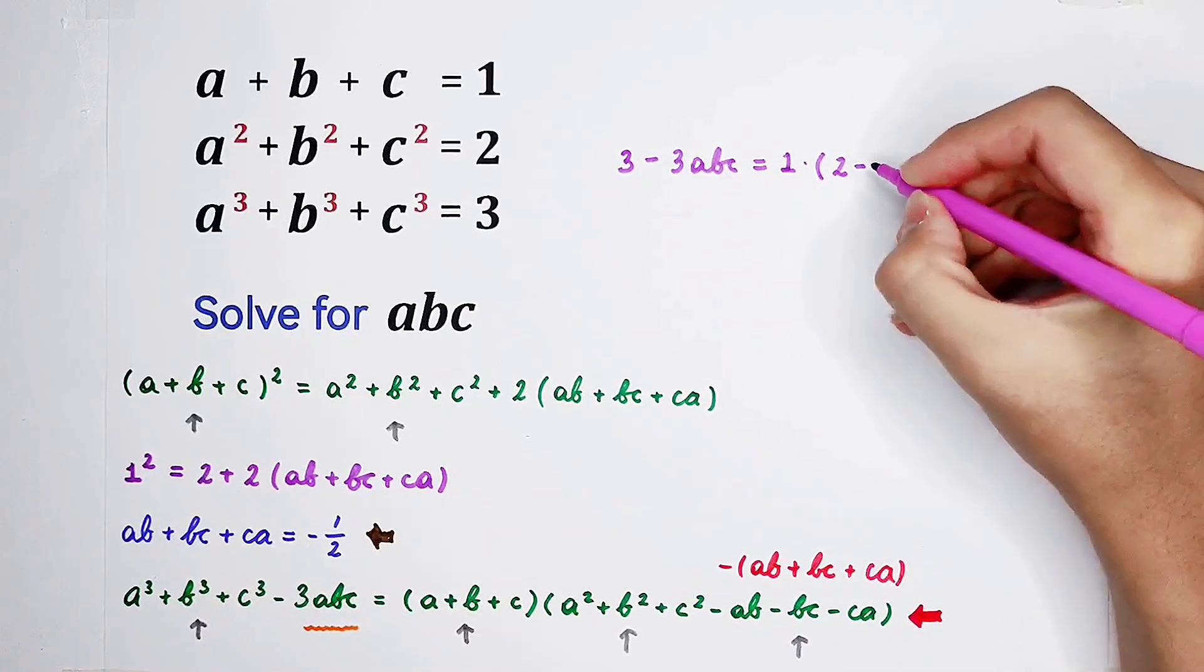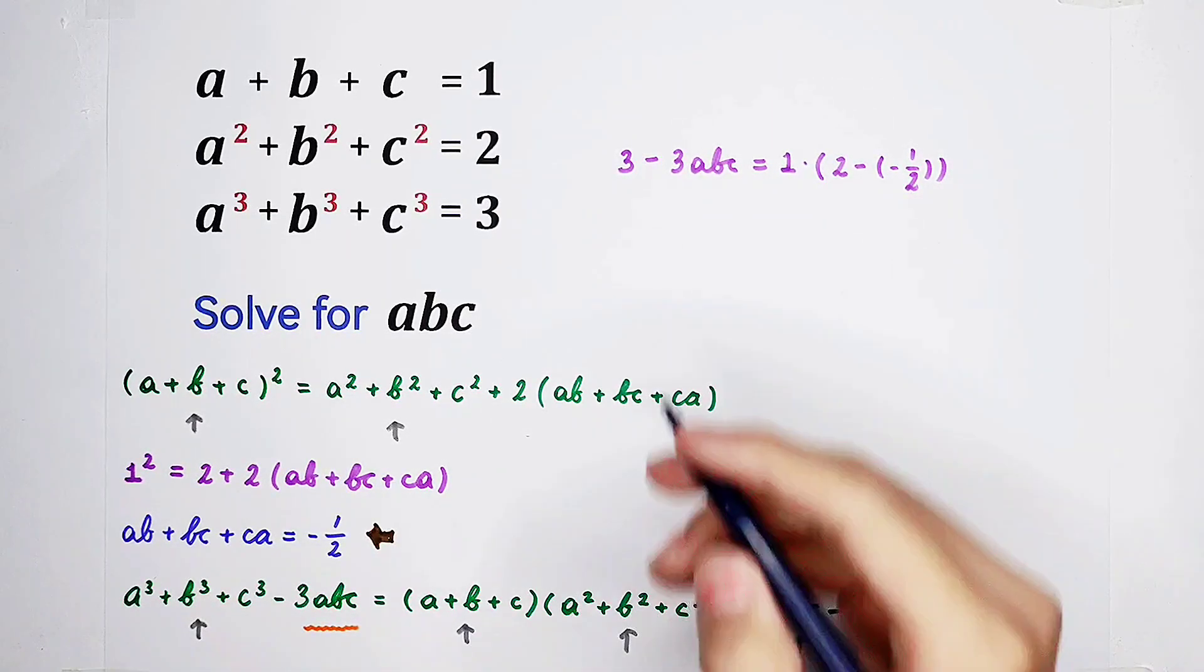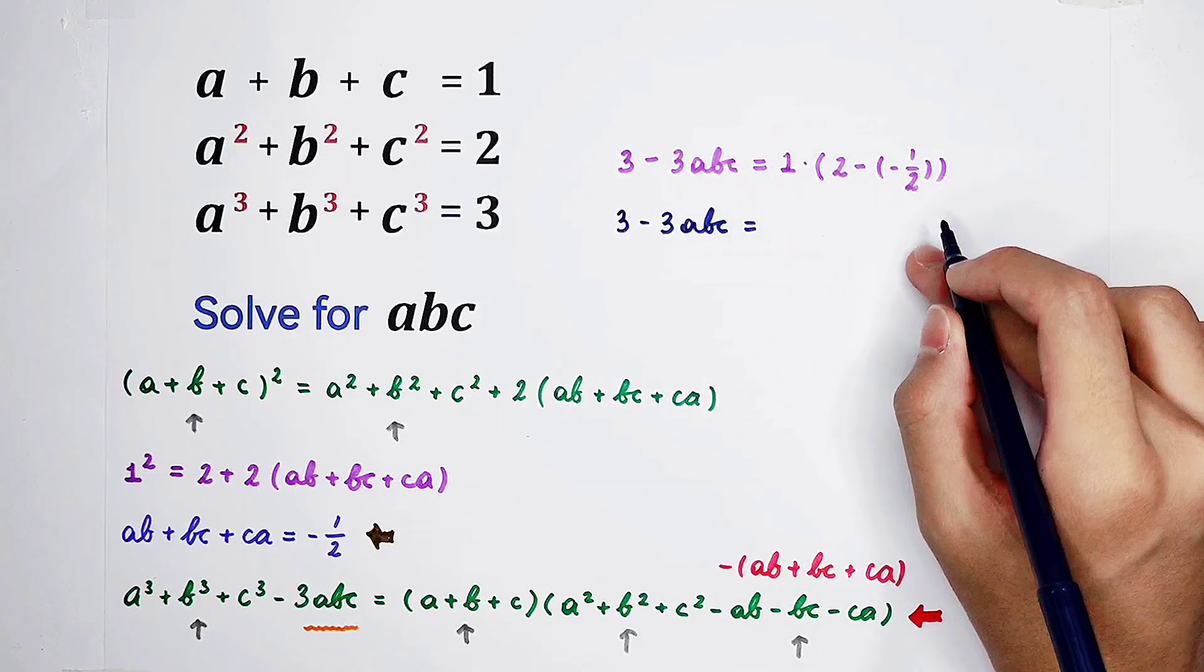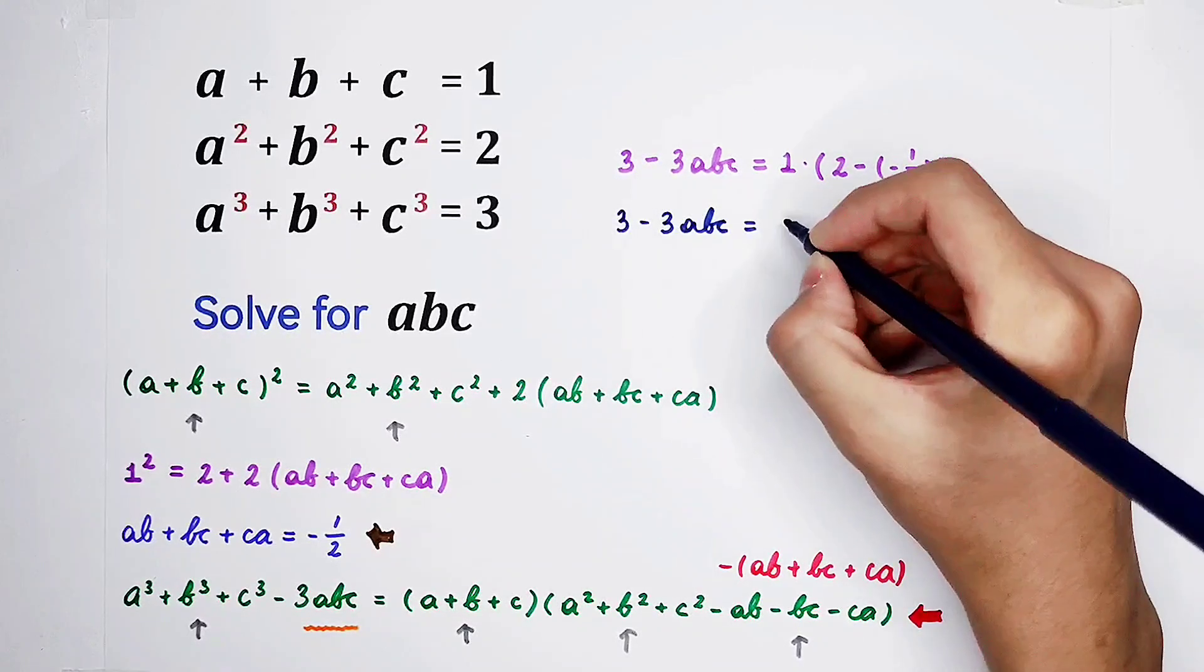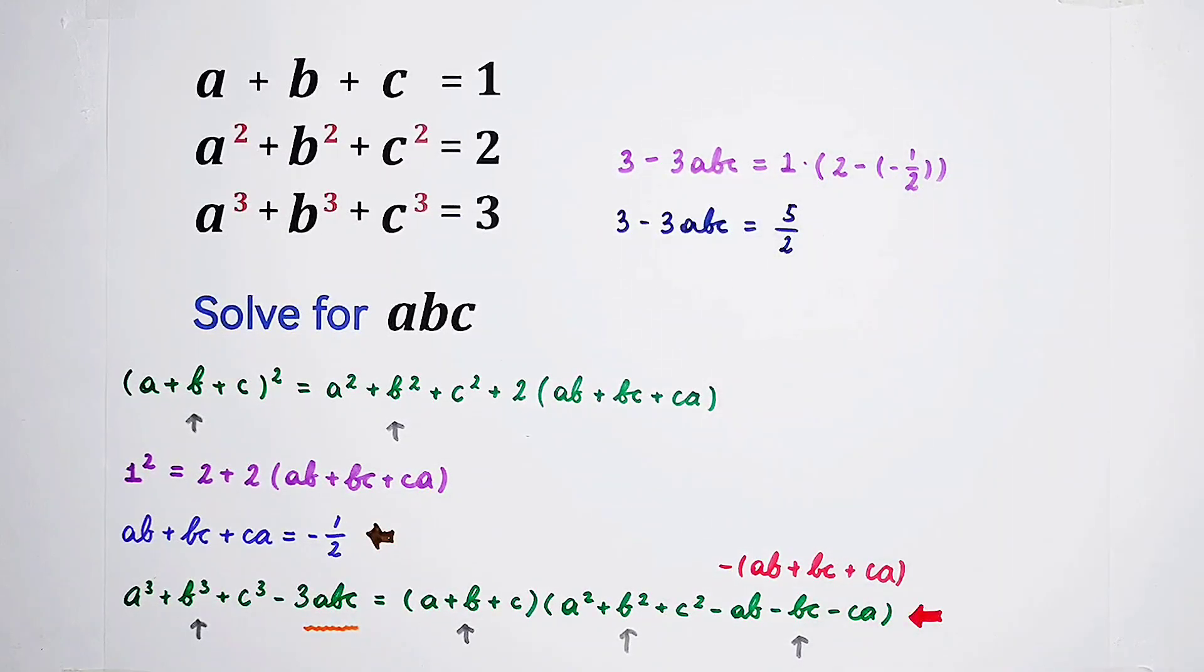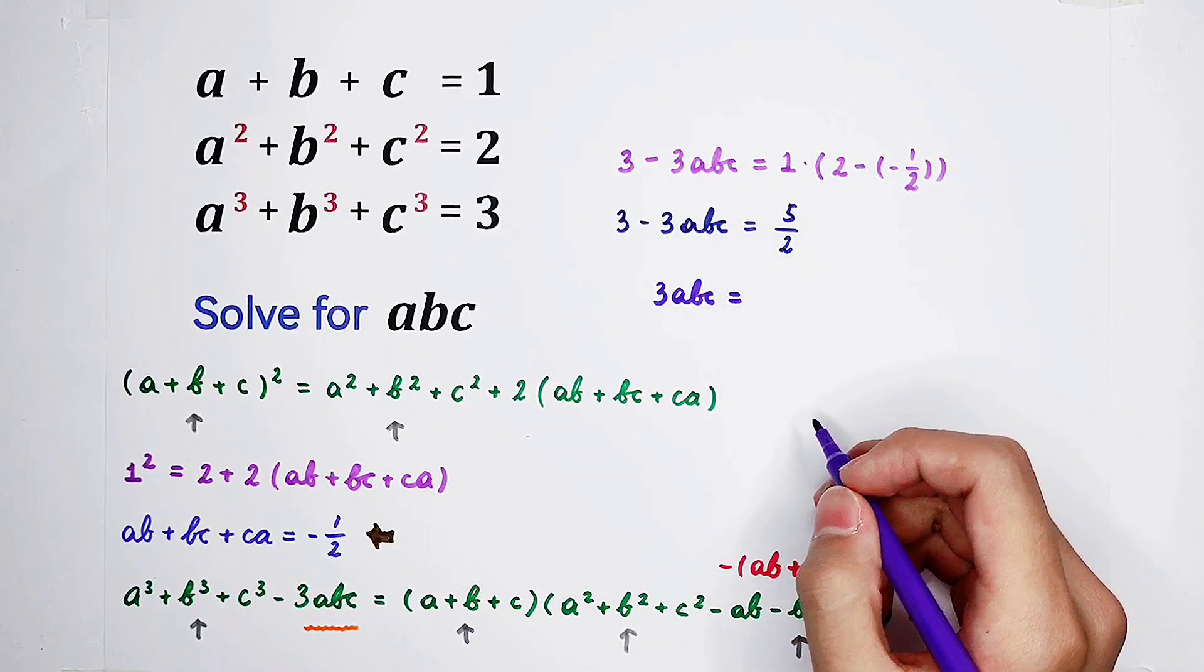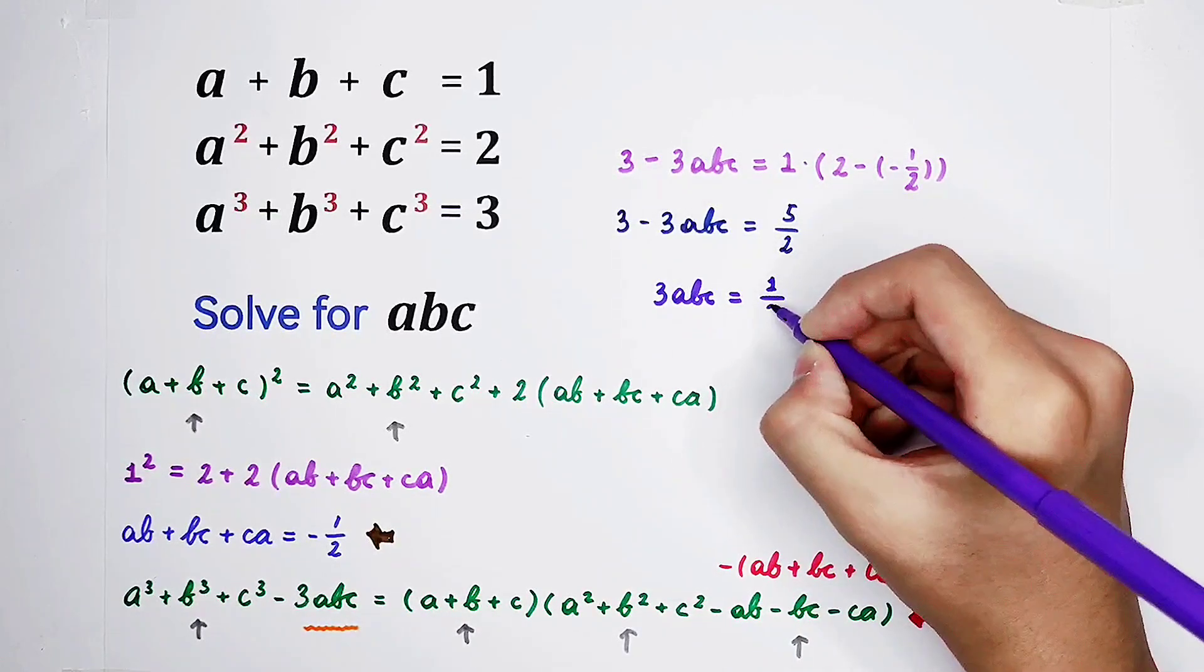So, actually, it is equal to 2 minus negative 1 over 2. 3 minus 3 times ABC, it is 1 times any number equals that number. 2 minus negative 1 over 2 is 2 plus 1 over 2, which is 5 over 2. And then, 3 times ABC is 3 minus 5 over 2. 3 is actually 6 over 2. 6 over 2 minus 5 over 2 is 1 over 2.